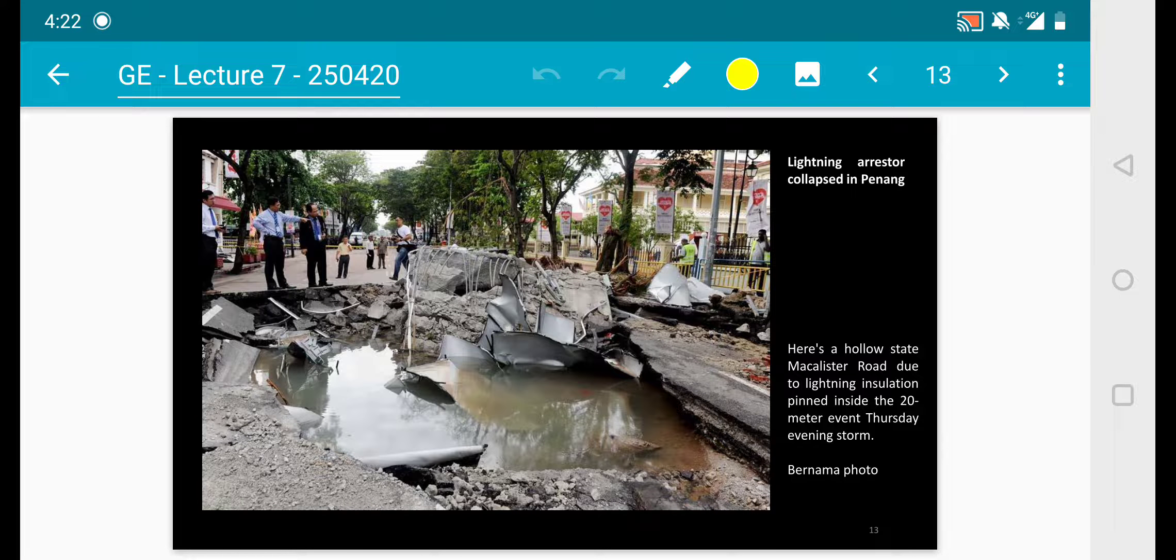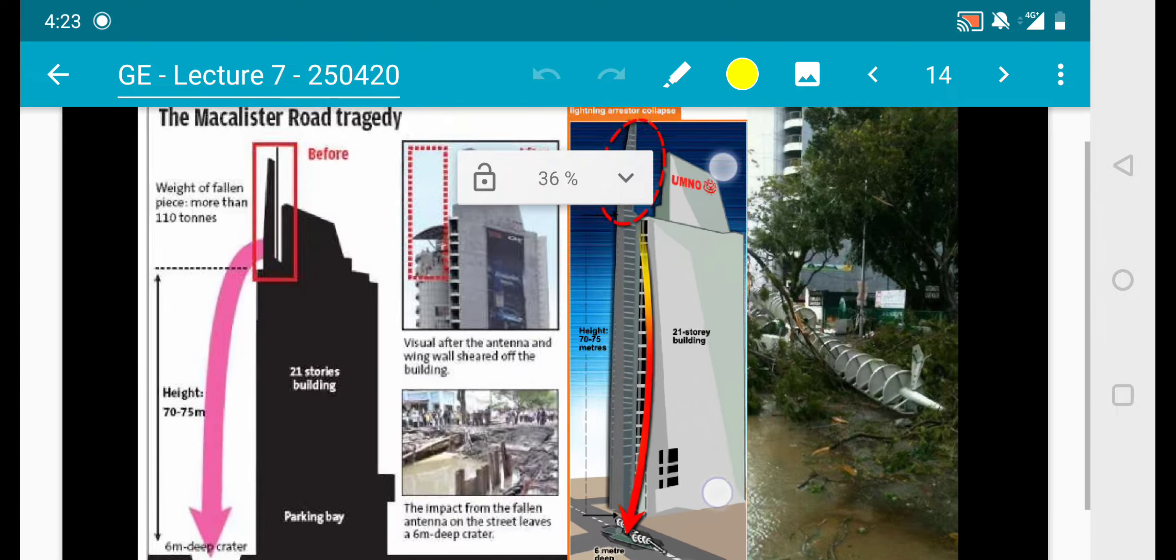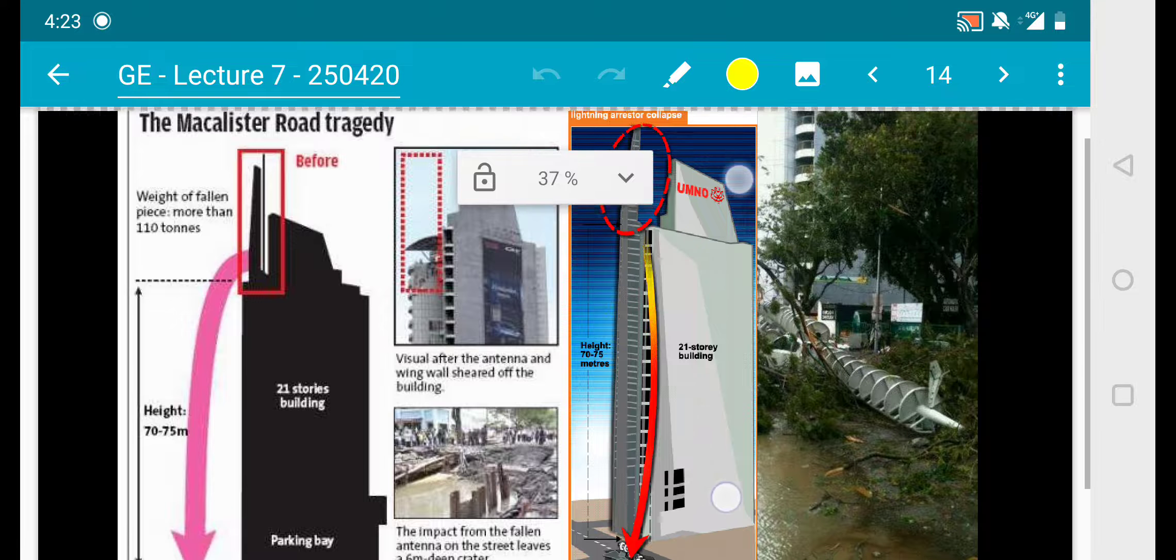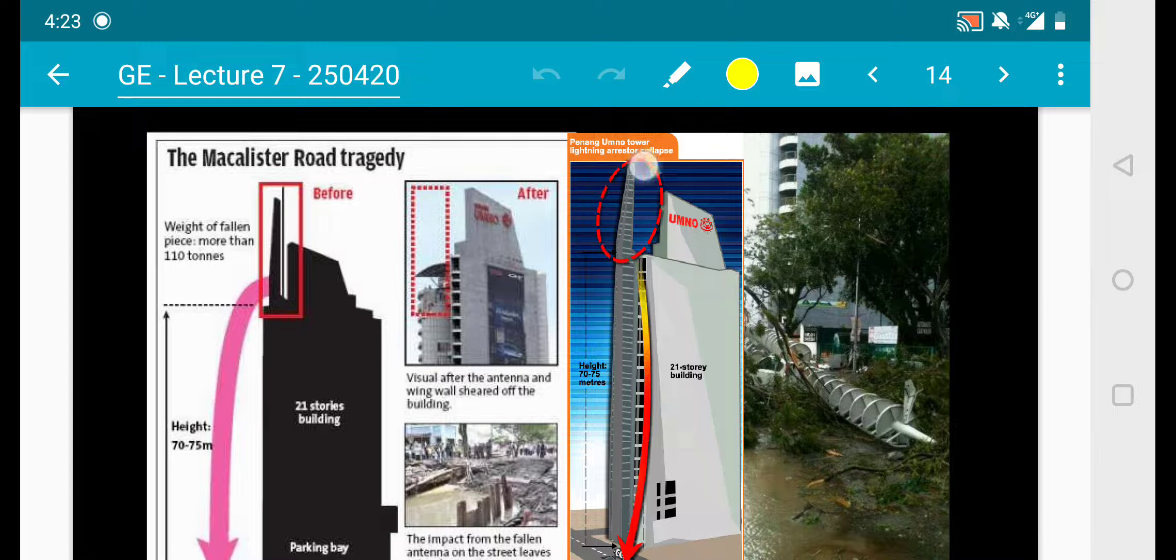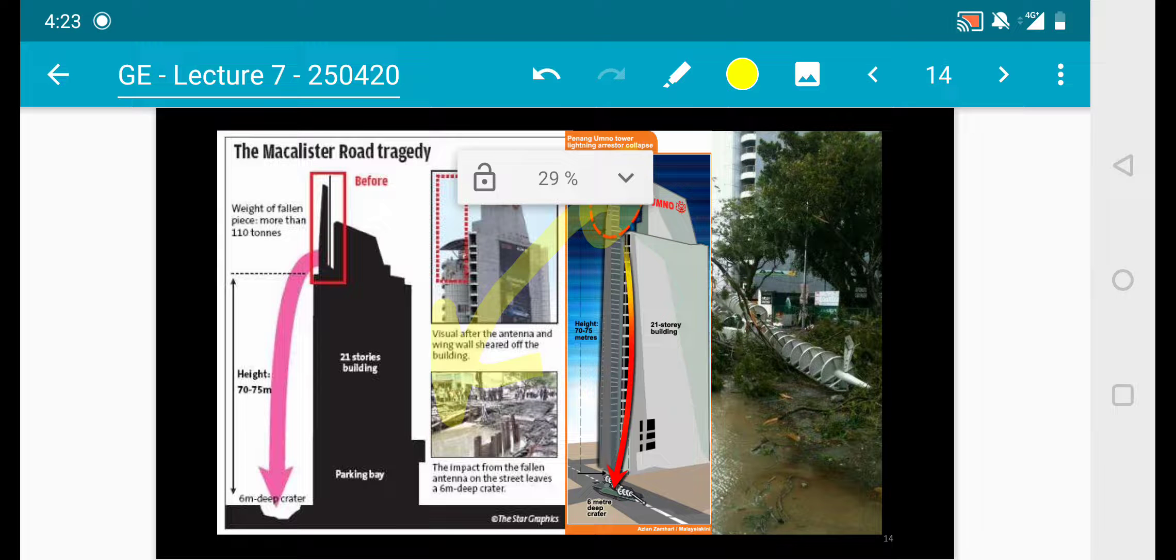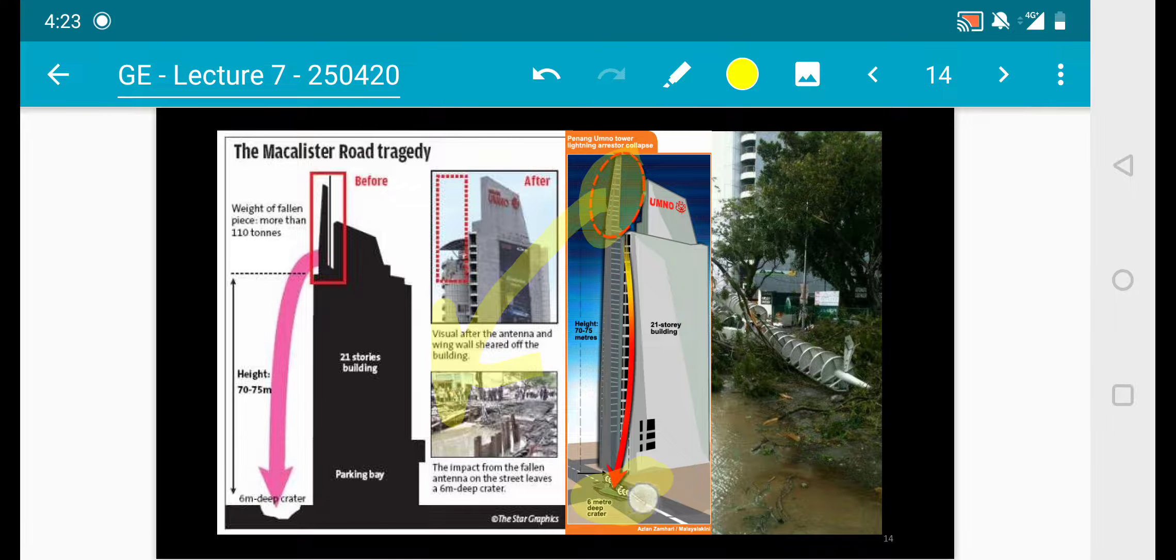This is the second case - another sinkhole but it is caused by an impact from a portion of a building that fell down. If you look at a bigger picture, this is a 21-story building. During a heavy rain thunderstorm, a portion of this building fell down and hit the road and it penetrates six meters inside. It brought along a car inside, which was a Myvi, and there was a person inside. The person was dead, got buried to a depth of six meters down there.